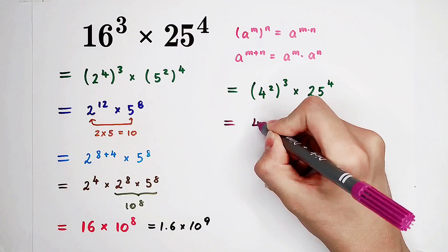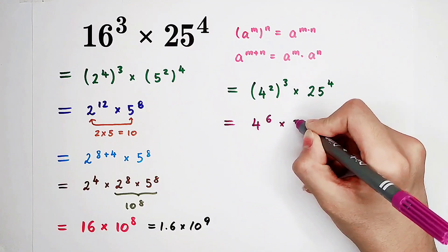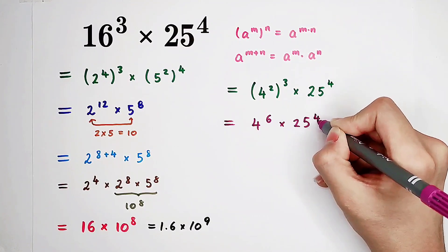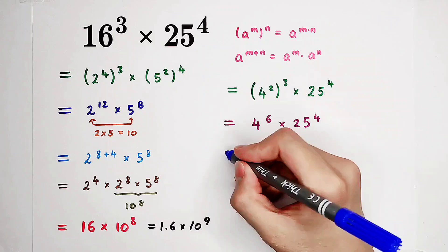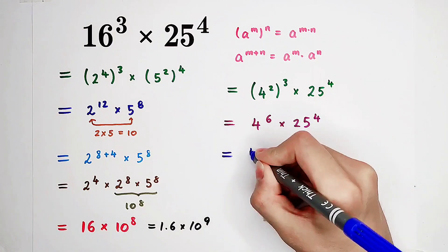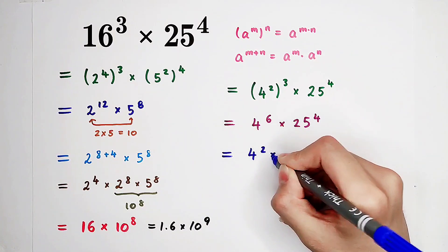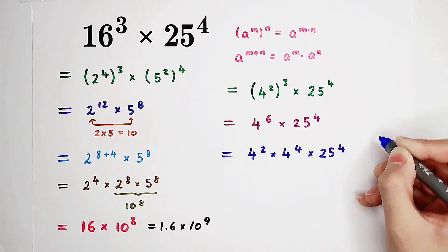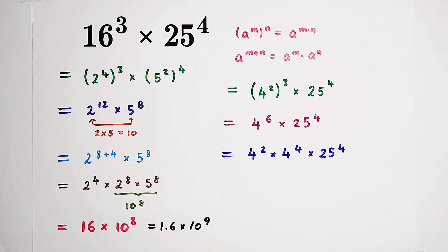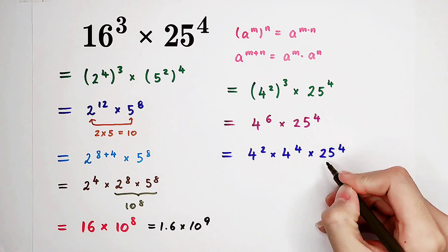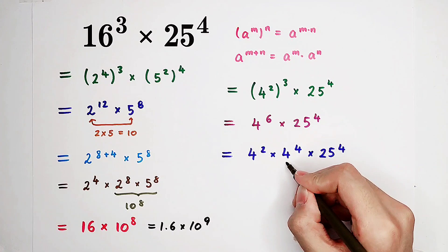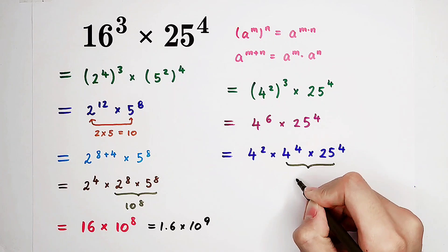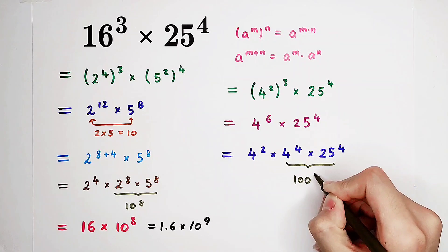Then, it is 4 to the power of 6 times 25 to the power of 4. The same method. It is 4 to the power of 2 times 4 to the power of 4, then times 25 to the power of 4. Because 4 times 25 is 100, so it is 100 to the power of 4.